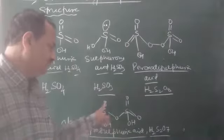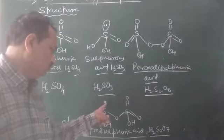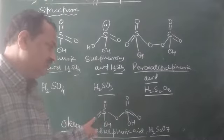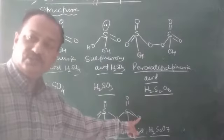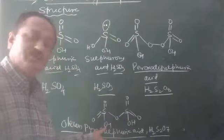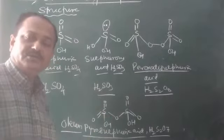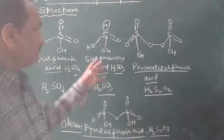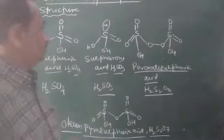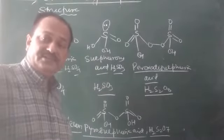In peroxosulfuric acid, there are two oxo groups on one sulfur and one OH group. This completes the overview of the oxo acids of sulfur and their structures.